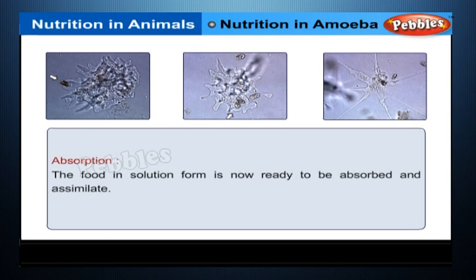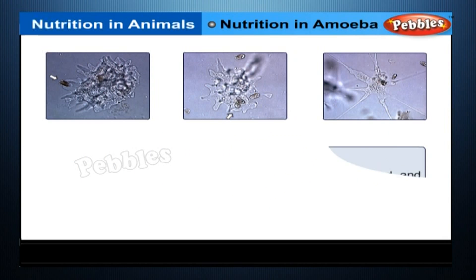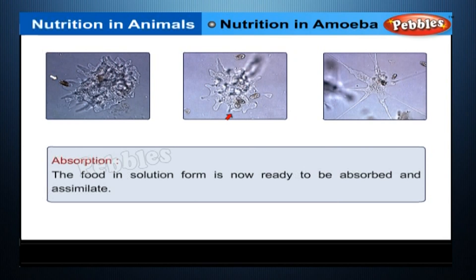Digestion in amoeba is very simple and direct. Once a prey is engulfed, certain chemicals called enzymes are released into the food vacuole. Enzymes, along with other digestive juices, break down the food, forming a solution. The food in solution form is then ready to be absorbed and assimilated.